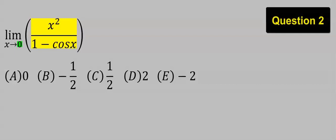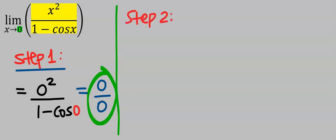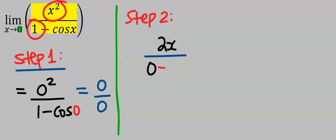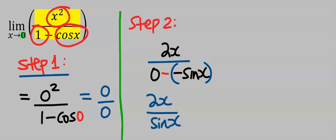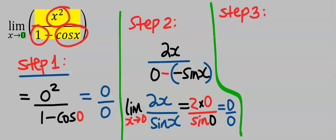Next, let's consider this question. Step one: apply direct substitution, and we get zero over zero. Step two: apply L'Hôpital's rule — differentiate each variable separately. Differentiate x² to get 2x; differentiate 1 to get zero (there is a minus); differentiate cos x to get minus sin x. Taking the limit as x tends to zero gives zero over zero, which is undefined.